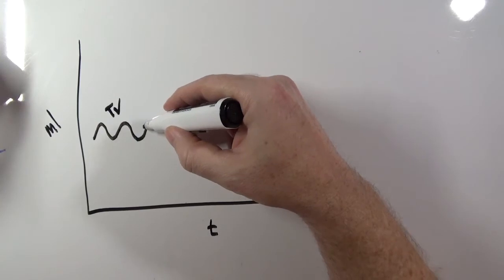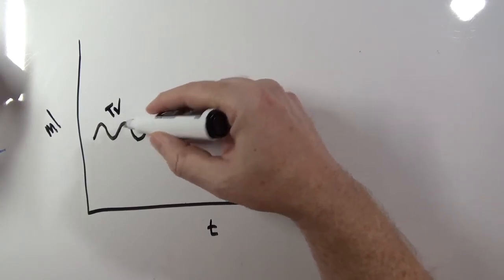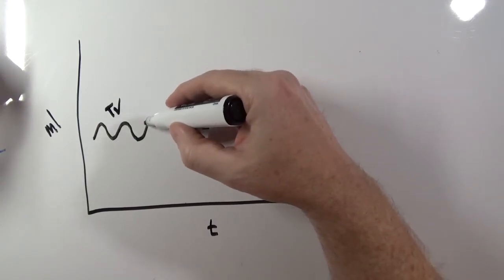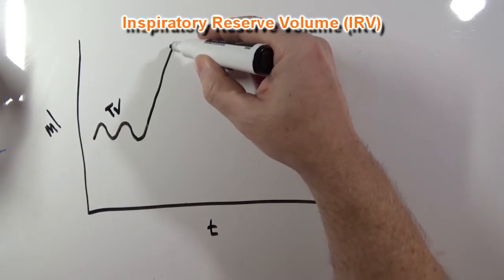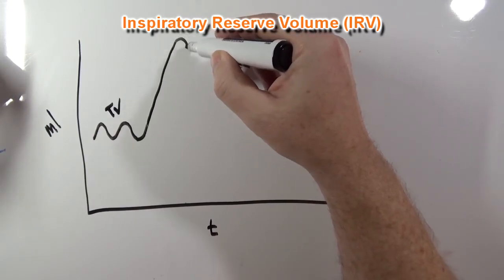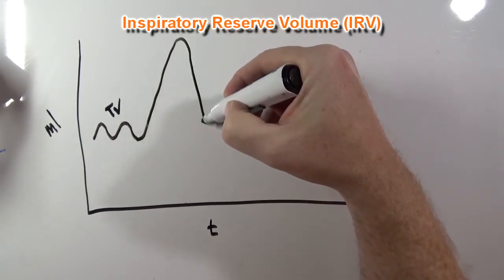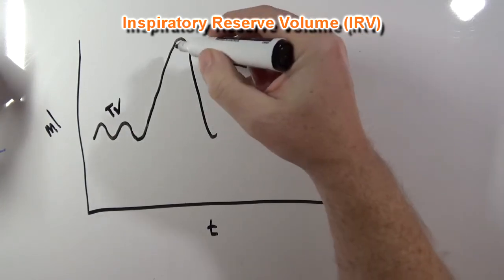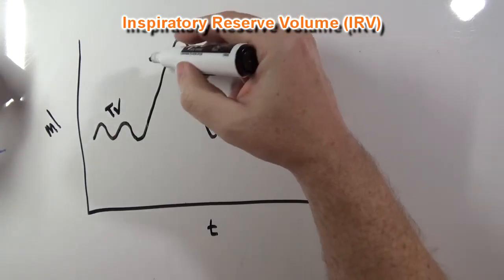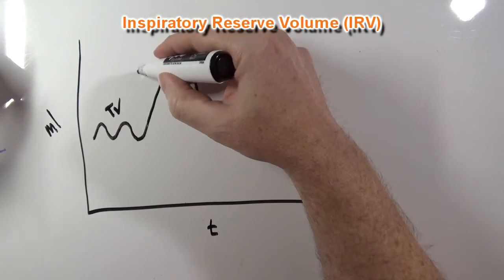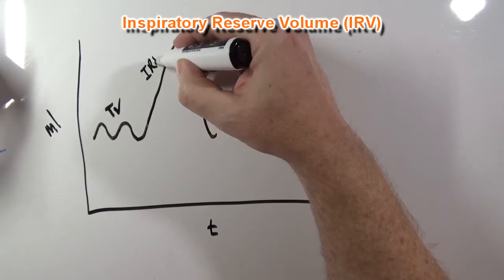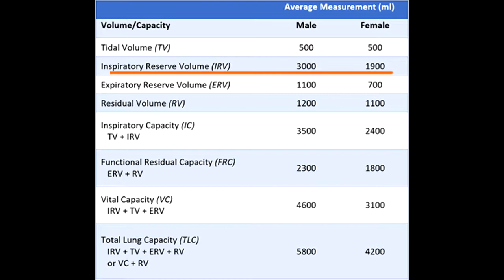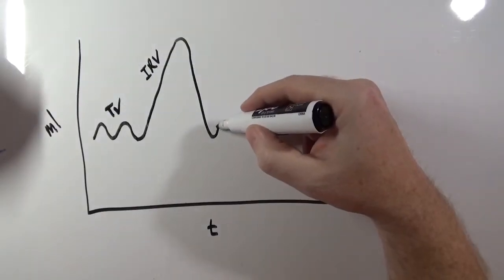Now if I were to breathe in normally — a normal tidal volume inhalation — and then breathe in as much air as I can, and then exhale that air, this volume of air would be inspiratory reserve volume. The average inspiratory reserve volume for a male is 3000 milliliters, and for a female is 1900 milliliters.